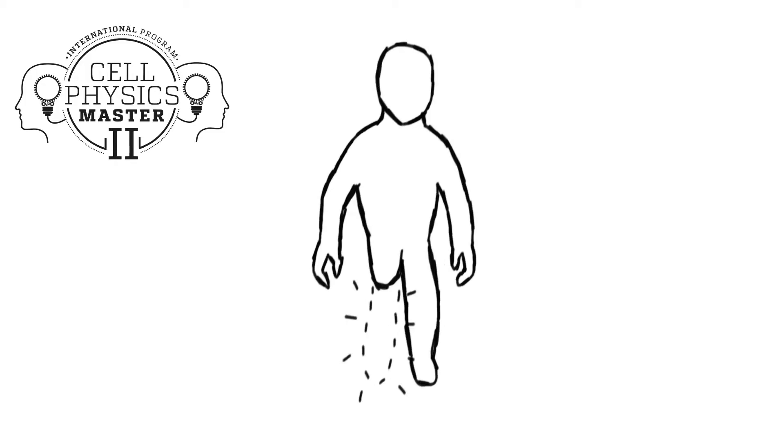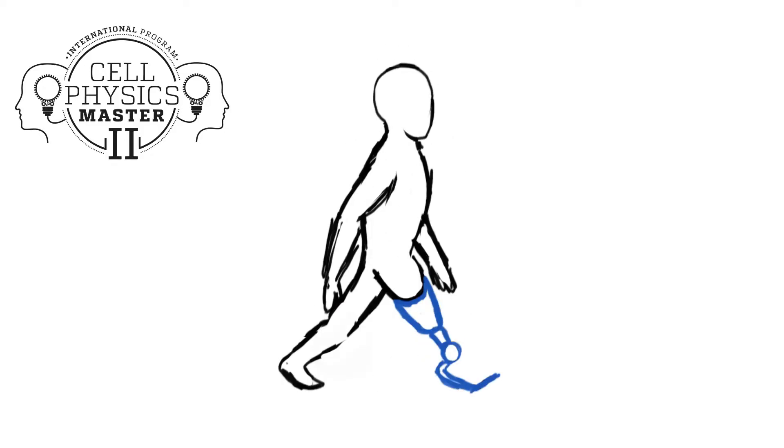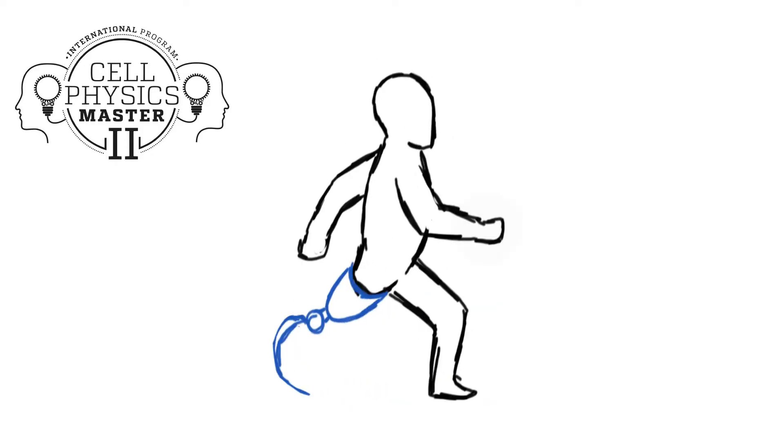A prosthesis is a device that replaces a missing part of the body. In general, their purpose can be summarized as restoring the natural function of the missing body part.